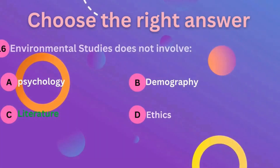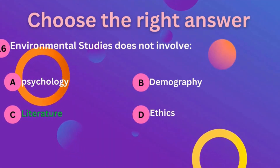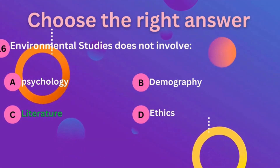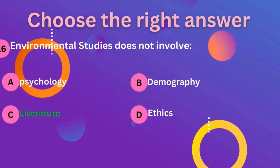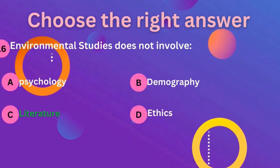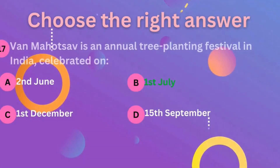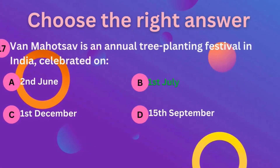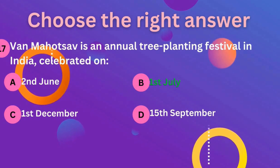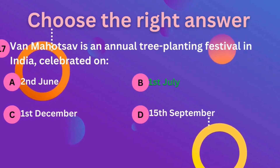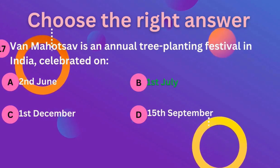Question number 16: environmental studies does not involve — that is literature. So C is the correct answer. Question number 17: Vanamahotsav is an annual tree planting festival in India celebrated on? The correct answer is 1st July.